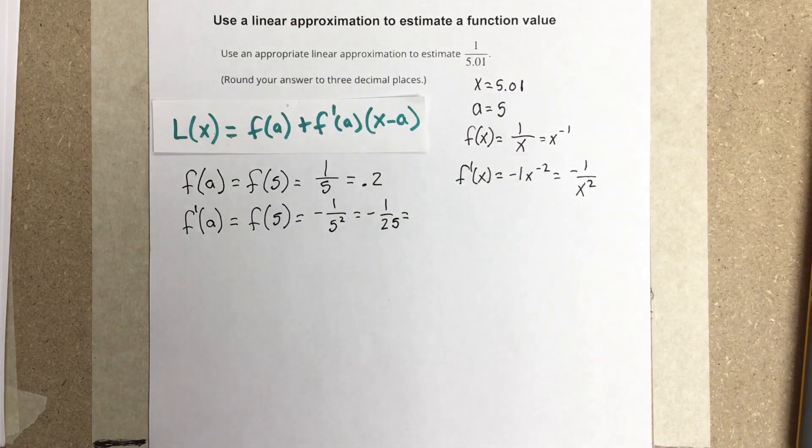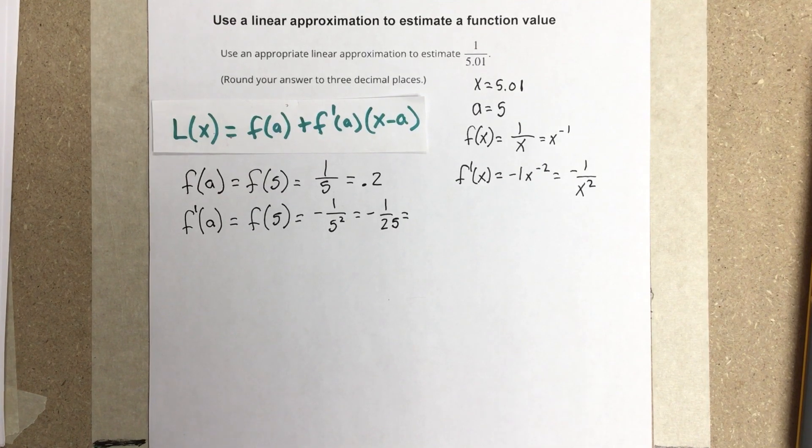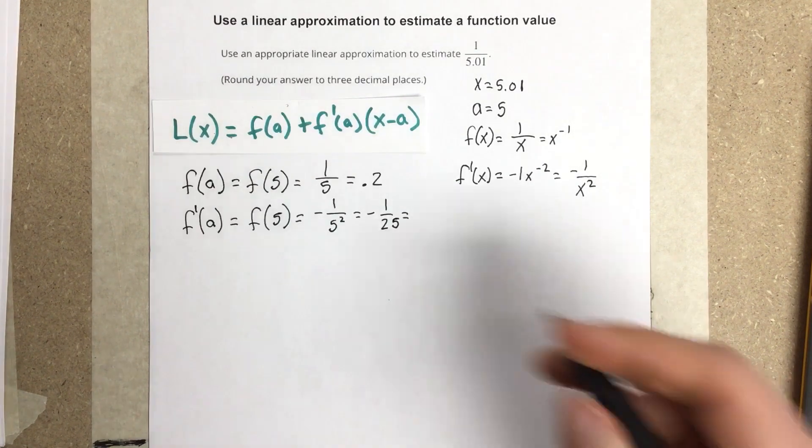Which I can find a decimal for. It's kind of nasty. Let's see. Oh no, it's not bad. Negative 0.04.